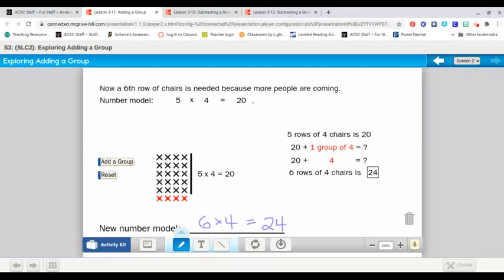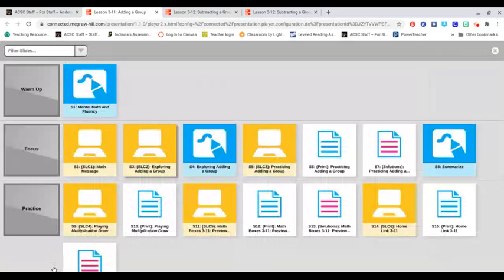So, what this is called is that five times four, which is a rather easy fact to figure out, is called a helper fact. And we can use that helper fact. Oh, I know five times four is twenty. Or I can count five, ten, fifteen, twenty. And then, if I add another group, then I know I'm going to have to add just four more to it. And now I know what six times four is. I'm wondering if that makes sense to you. I'm hoping that it does.